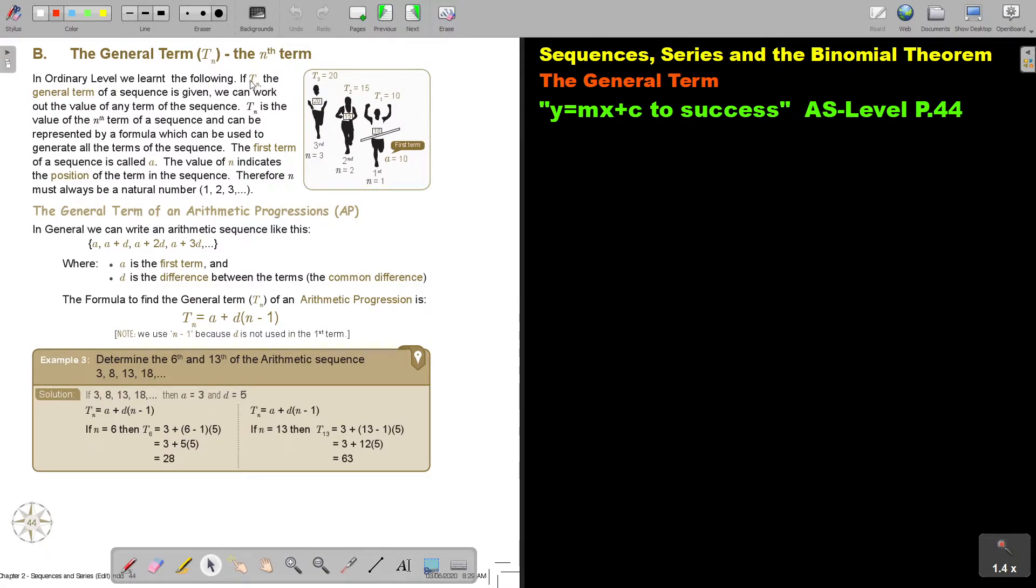If TN, the general term of a sequence, is given, we can work out the value of any term of the sequence. TN is almost like the formula for that sequence, is the value of the nth term of a sequence and can be represented by a formula which can be used to generate all the terms of the sequence. The first term of a sequence is called A. The value of N indicates the position of the term in the sequence. Therefore, N must always be a natural number.